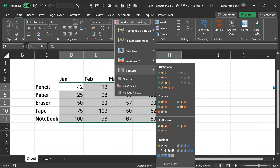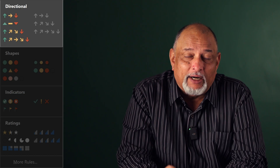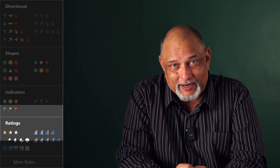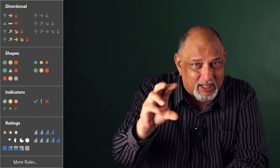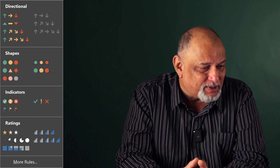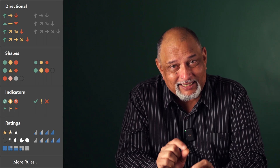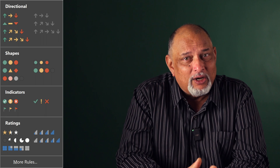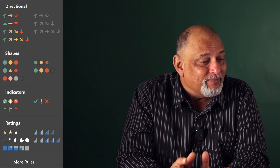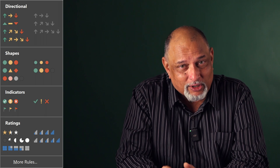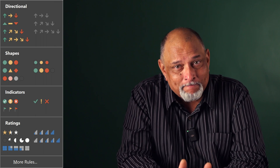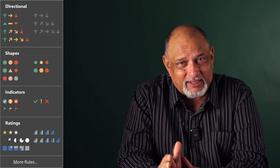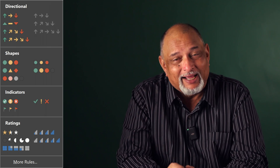If you go to icon sets, there are 20 types available. Don't look at the icons first — look at the categories. There are only four categories: directional, shapes, indicators, and ratings. Directional means something is above or below something — there is some above/below context. Shapes: where there is no direction, but you just want that shape and color — high means red, low means yellow. Then we have indicators — pass, fail, or red flag, yellow flag. And ratings means you have some kind of score or a project progressing halfway, 75%, like that. Choose the correct icon in the correct place.